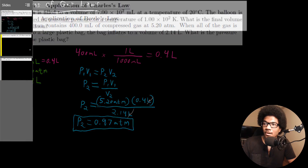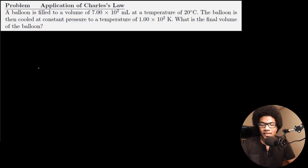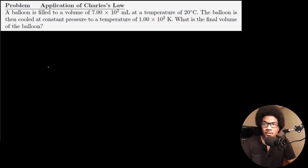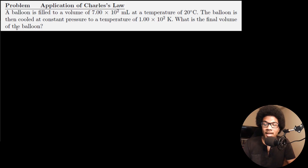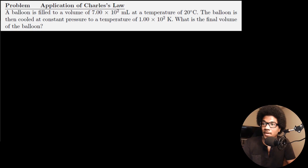Let's look at an application of Charles's Law. This problem says a balloon is filled to a volume of 7 × 10² milliliters — 700 milliliters — at a temperature of 20 degrees Celsius. The balloon is then cooled at constant pressure to a temperature of 1 × 10² Kelvin, or 100 Kelvin. What is the final volume of the balloon? We've been given its initial volume and temperature, and we want to use that to calculate the final volume.